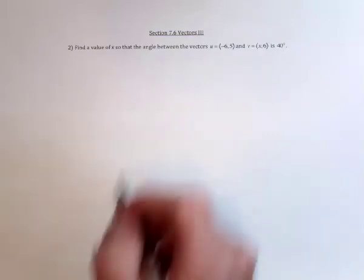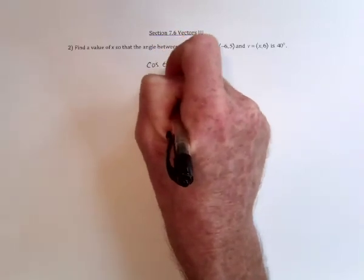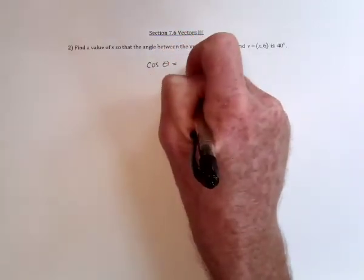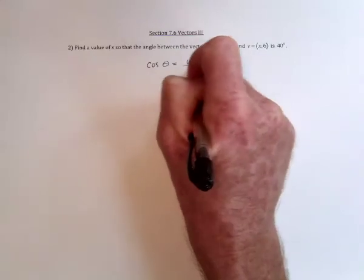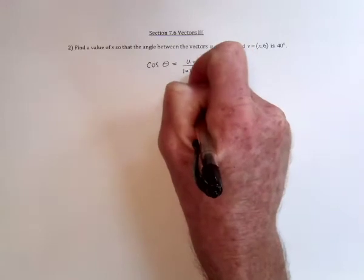So for the angle between two vectors, I'll be using the formula cosine of the angle between them is equal to the dot product of the two vectors, divided by the length of each vector, multiplied.